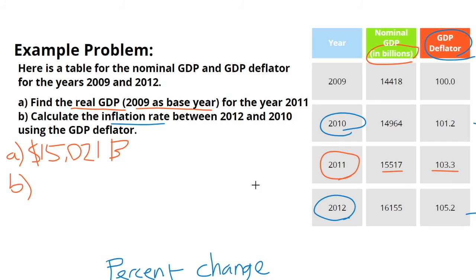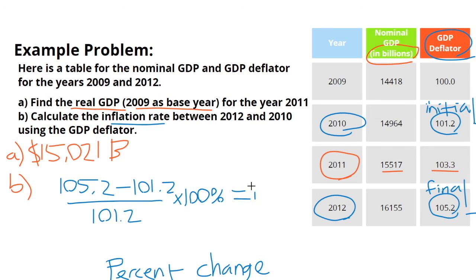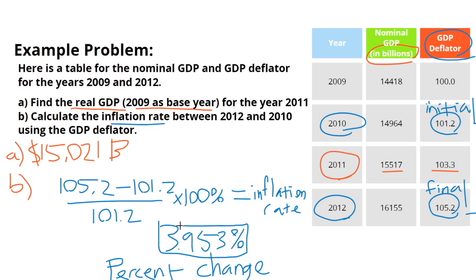So let's apply what we learned to this question. Using these two numbers, this will be your initial and this will be your final. The percentage change formula — (new − old) / old × 100% — gives us an inflation rate equal to 3.953%. Remember to leave in three decimal places for AP format.